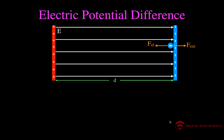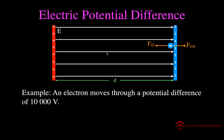To show how we use that terminology: here are our parallel plates with the electric field. A problem might say an electron moves through a potential difference of 10,000 volts. By convention, the positive plate is at the higher voltage. So we say the positive plate is at 10,000 volts and the negative plate is at 0 volts — the potential difference between them is 10,000 volts.